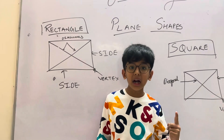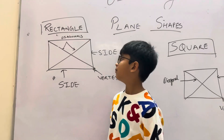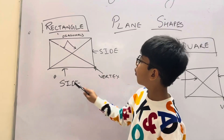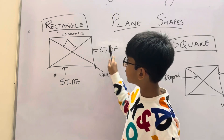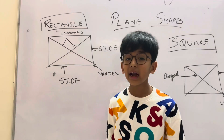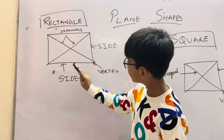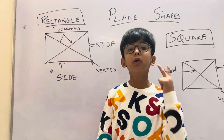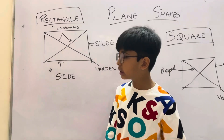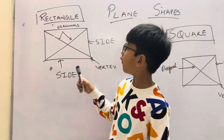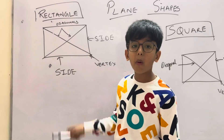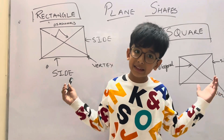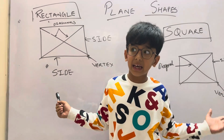For the rectangle: a rectangle has four sides, four vertices, and two diagonals of equal length. Opposite sides are equal.